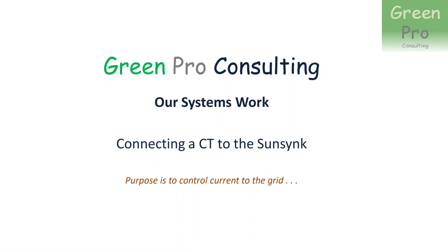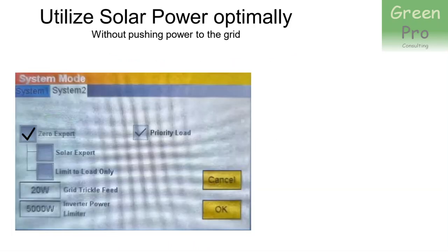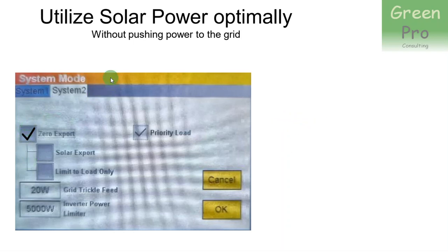Let's discuss the purpose first. To do that, I want to visit this screen on the SunSync inverter setup. It's the system mode. The way that you utilize your solar power optimally is to set system mode 2 to zero export, because that switches on the mechanism where you push back power into the grid. And if you don't tick solar export, you're telling it not to push current past the CT.